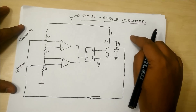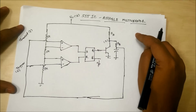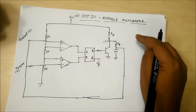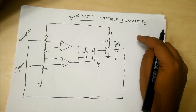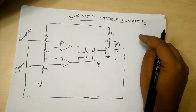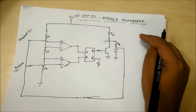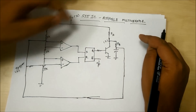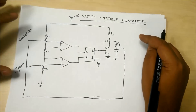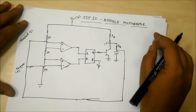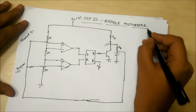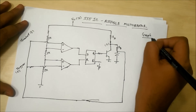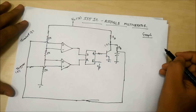In an astable multivibrator, we need not apply any trigger input externally. When we turn the circuit on, it will remain in the low state for some time, then go to high state, then again low, then high — this is why it is called an astable multivibrator. Let's understand with the help of a graph how the output is going to change state.